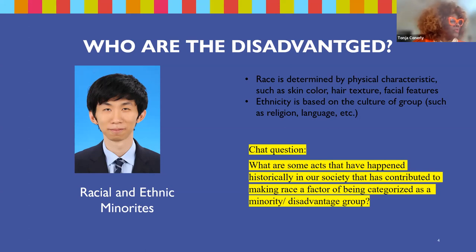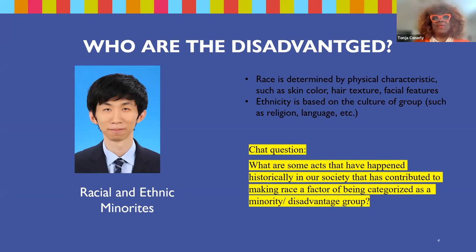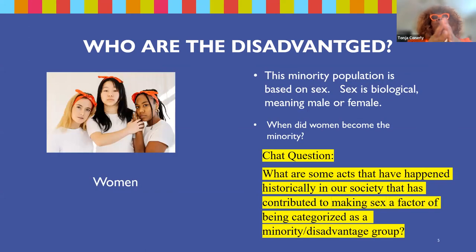It looks like we've got World War II internment camps — very good. These are the things that we're looking for: distinguishing race, genocide. We're looking at the Native Americans here in the United States, the Muslims and the Serbs, the Holocaust. All of these are racial factors.